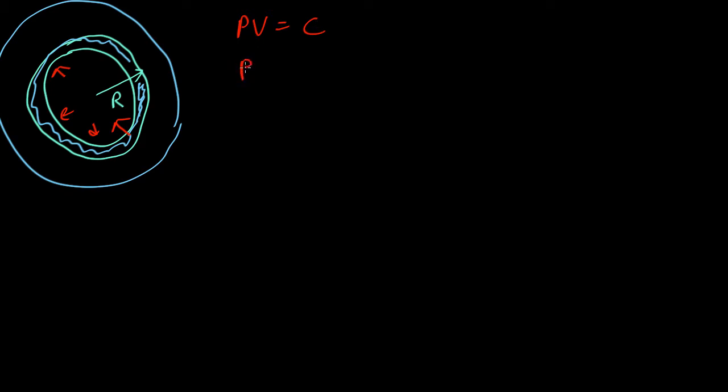So in general, what people tend to use is PV to some power gamma equals a constant. And if gamma equals 1, that's the ideal gas. But in other situations, for example, where the temperature is not fixed, then gamma may not be 1.